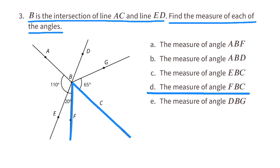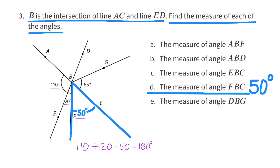D: the measure of angle FBC. We just figured that out: 110 degrees plus 20 degrees plus 50 degrees equals 180 degrees, so the measure of angle FBC is 50 degrees.